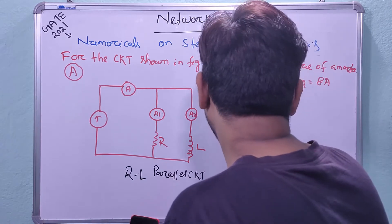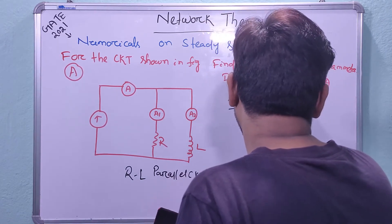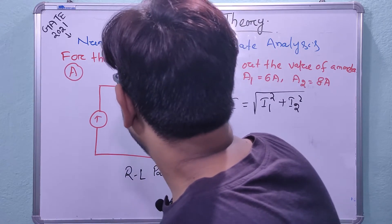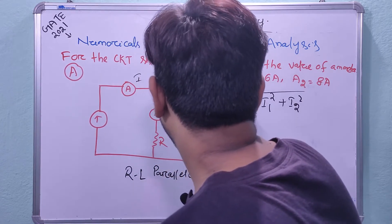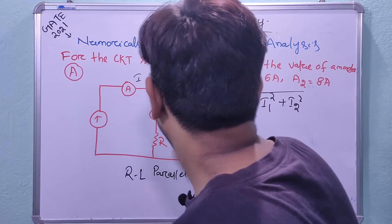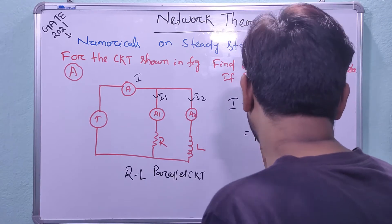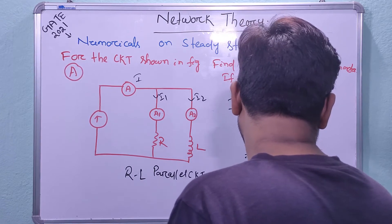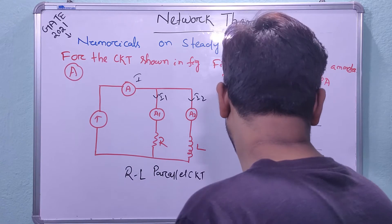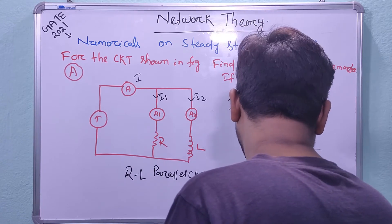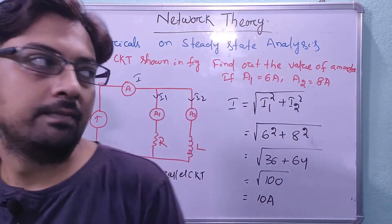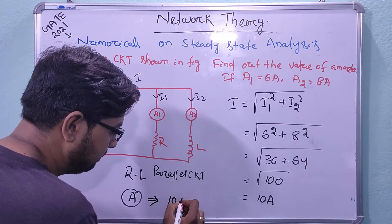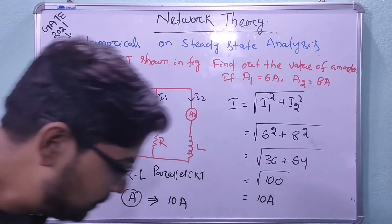For an R-L parallel circuit, the total current is given by I = √(i1² + i2²). Substituting: I = √(6² + 8²) = √(36 + 64) = √100 = 10 ampere.